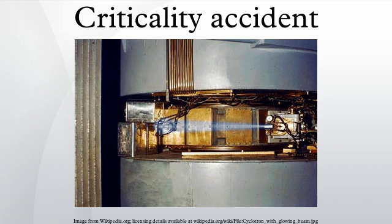The exponential excursion can reach a peak power level then decrease over time, or reach a steady state power level where the critical state is exactly achieved. The steady state excursion is also a state in which the heat generated by fission is balanced by the heat losses to the ambient environment. This excursion has been characterized by the Oklo natural reactor that was naturally produced within uranium deposits in Gabon, Africa about 1.7 billion years ago.